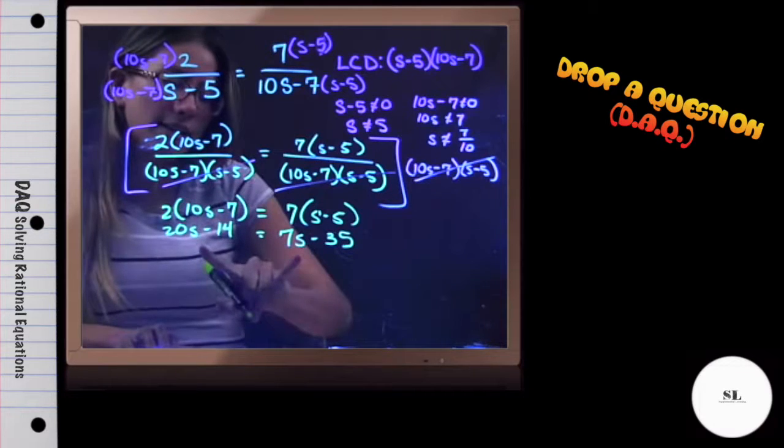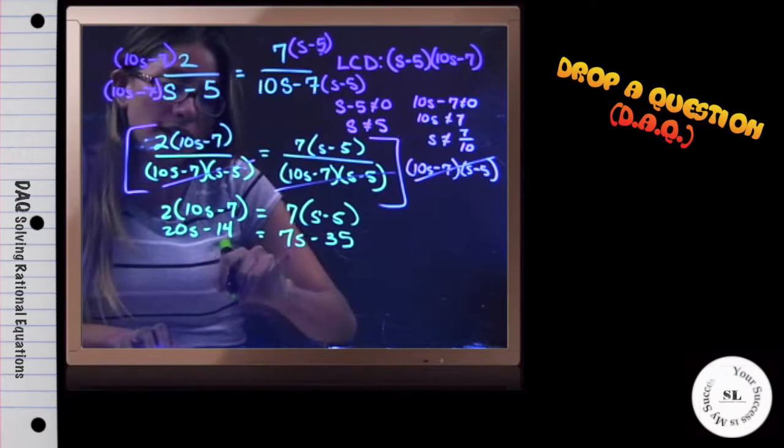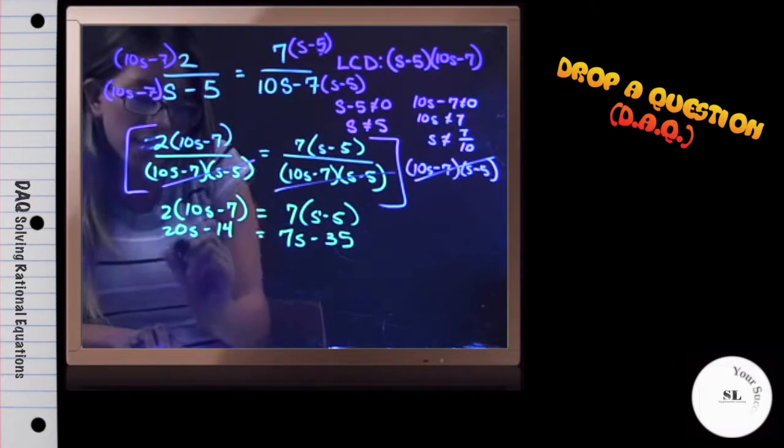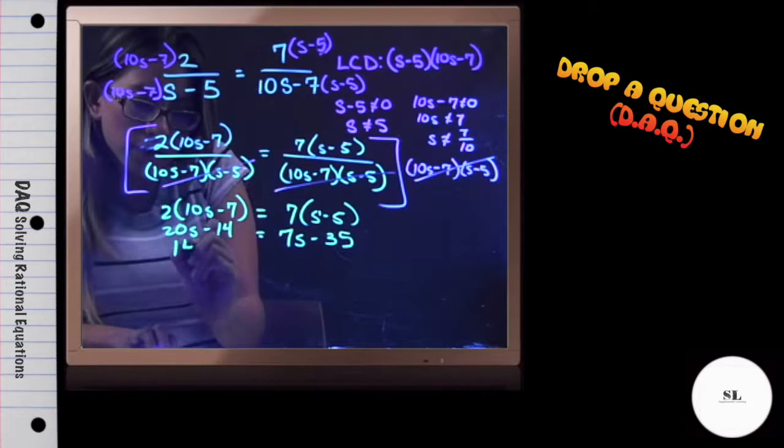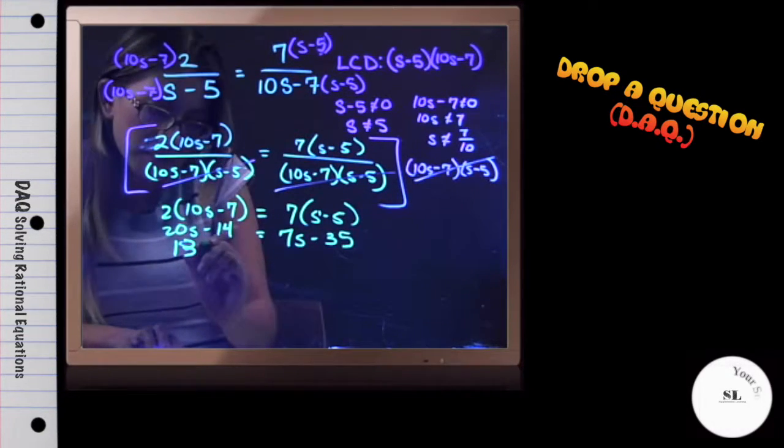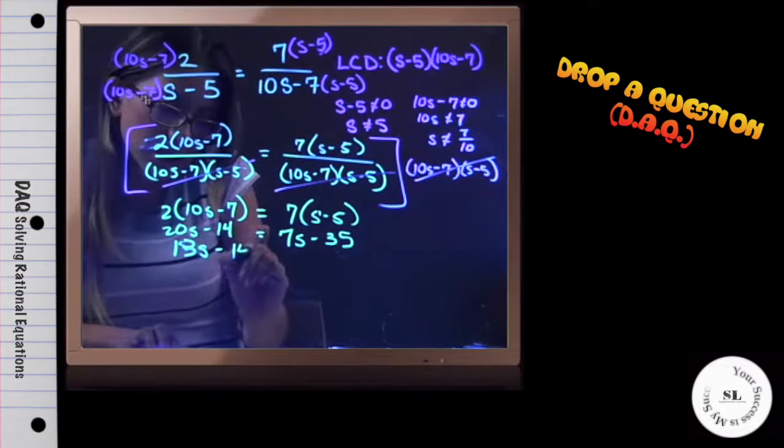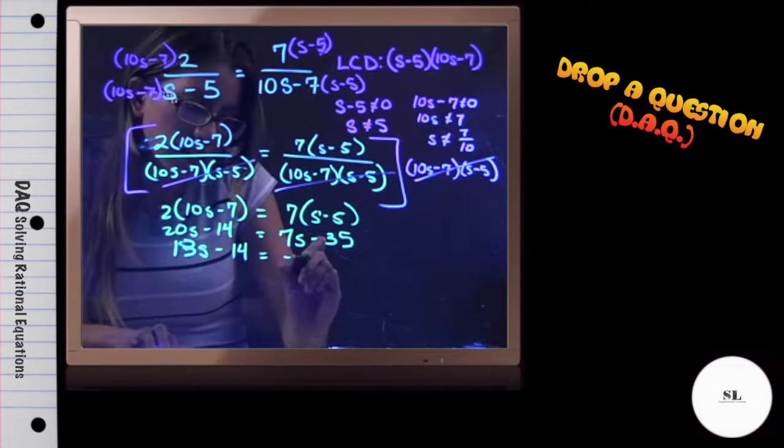I need to get my s's on one side of the equation, so I am going to go ahead and subtract 7s to both sides. I am left with 13s minus 14 equaling negative 35.